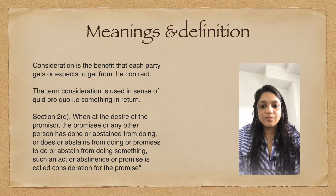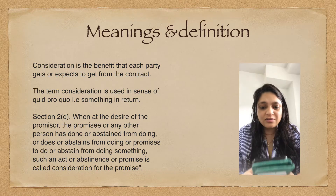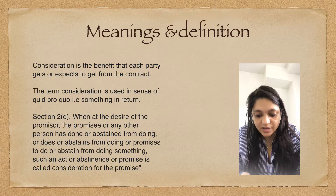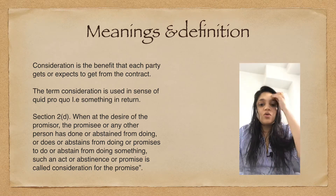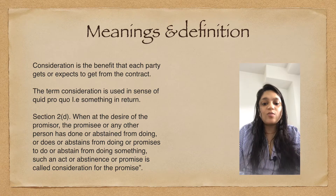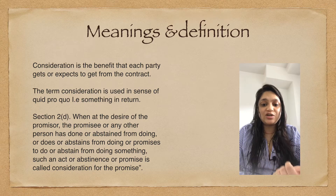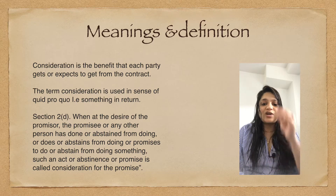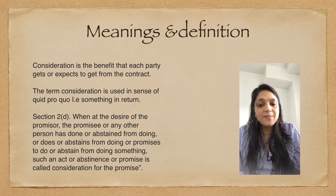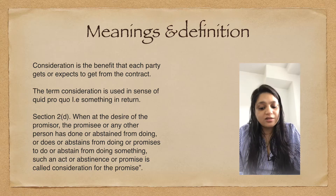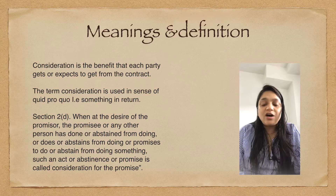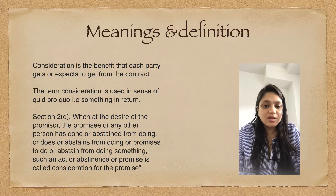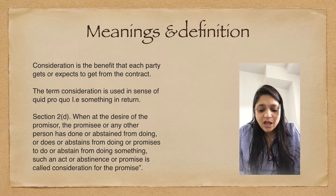For consideration, we use the term 'quid pro quo' — that is, something in return; getting one thing in exchange for another. So B gets money and A gets the car — both parties get something. That is the consideration for both parties from a contract. To form any contract, consideration is a necessary essential element — without consideration, there is no contract. So there must be something in return for both parties.